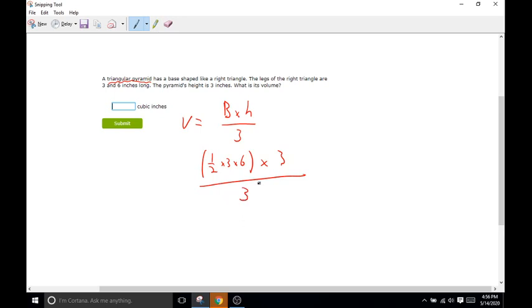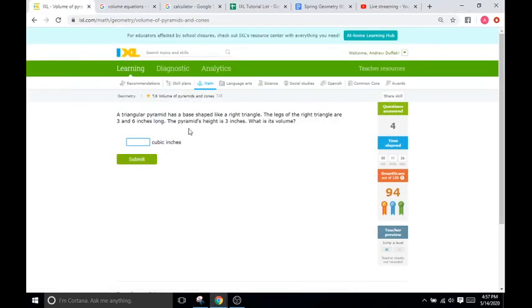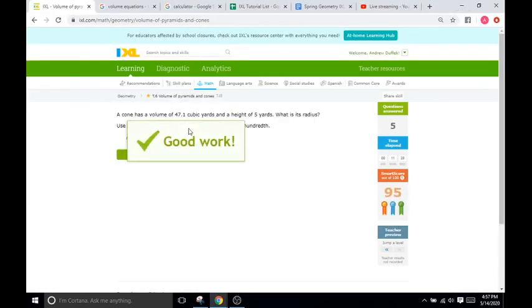This one is very easy. The 3s cancel out, which is nice. And then we'll do 1 half times 3 times 6. 3 times 6 is 18, and half of 18 is going to be 9. So the volume is going to be 9. And there we have it.